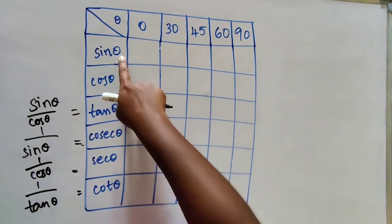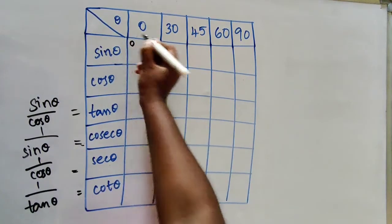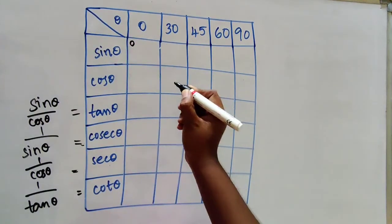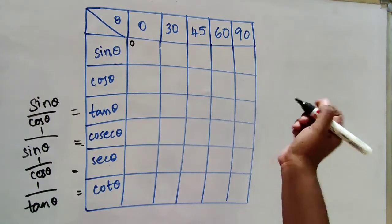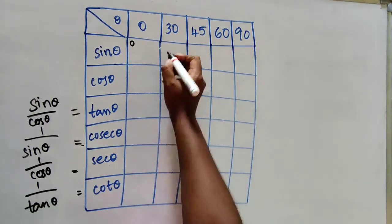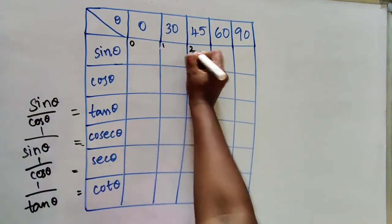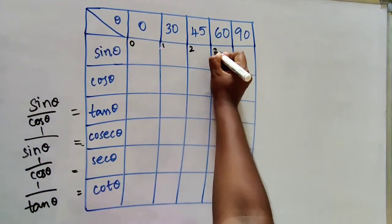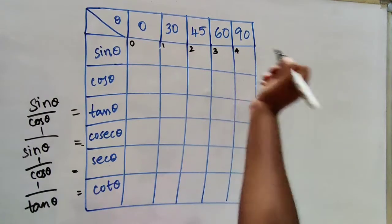So for sin theta, the first row — write numbers from 0 to 4 in a line: 0, 1, 2, 3, 4.